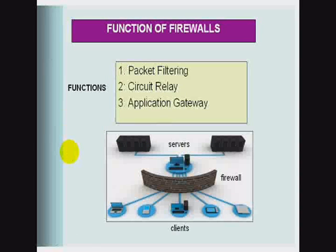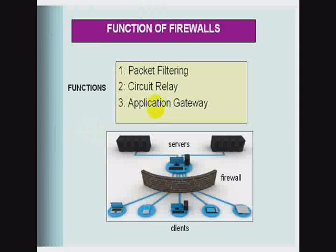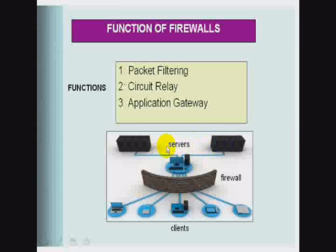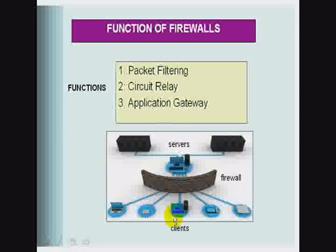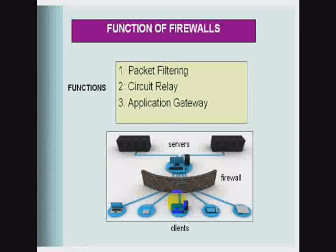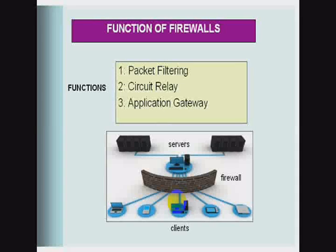The firewall has three functions: packet filtering, circuit relay, and application gateway. Looking at the graphic — the basic representation of a network — this is the local network with servers, this is the firewall, and these are the resources out there on the internet: laptops, iPhones, iPods, and other resources. Filtering is the most basic function, which consists of examining incoming or outgoing packets and allowing or disallowing their transmission based on a set of configurable rules called policies.